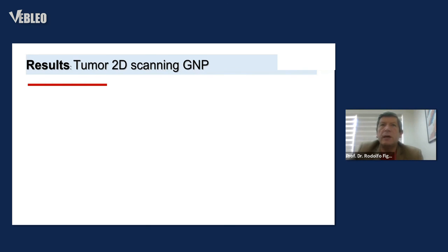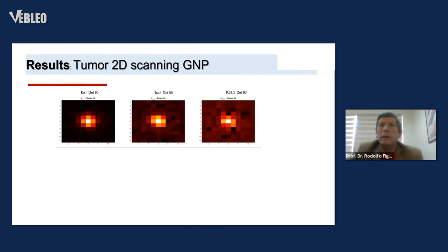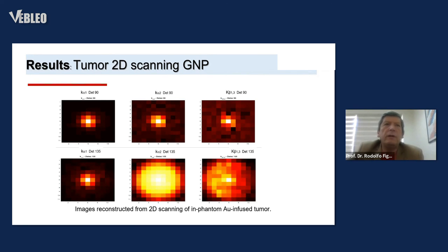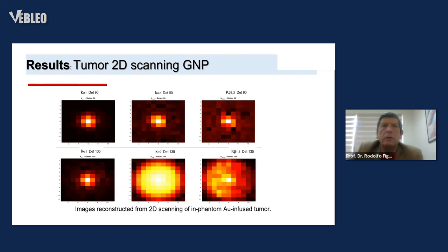We have a tumor 2D scanning of gold nanoparticles for two fluorescence lines: K-alpha 1, K-alpha 2, and K-beta lines. For different angles and the same sample. This result was obtained with Monte Carlo simulation.